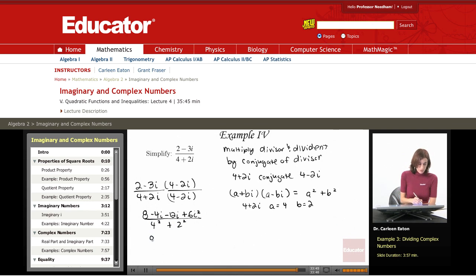Now, simplifying the numerator a bit further gives me 8. Negative 4i minus 12i is negative 16i plus 6i squared. In the denominator, 4 squared is 16 and 2 squared is 4.